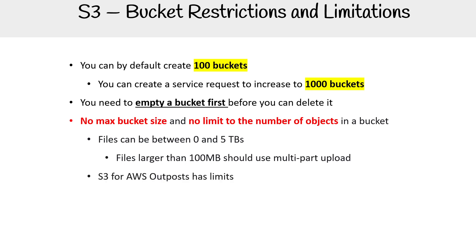For S3 on Outposts, it has limits. We'll talk about that in the Outposts section, which is separate from S3, where we talk about all Outpost services and the differences there. The idea is that Outposts allows you to run a rack of servers — which is AWS hardware loaded with AWS software with the S3 service on it — so it just cannot do the exact same thing as the cloud version, but it's still very powerful if you can afford it.